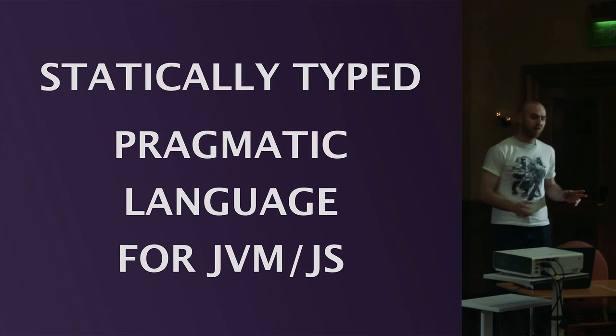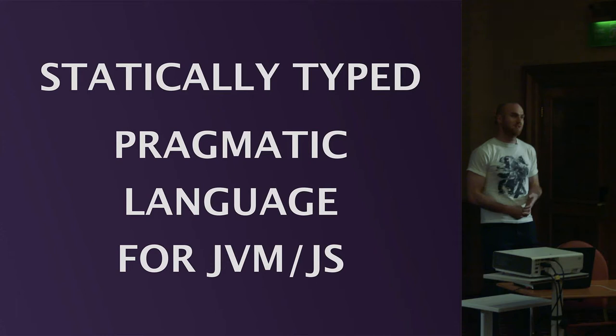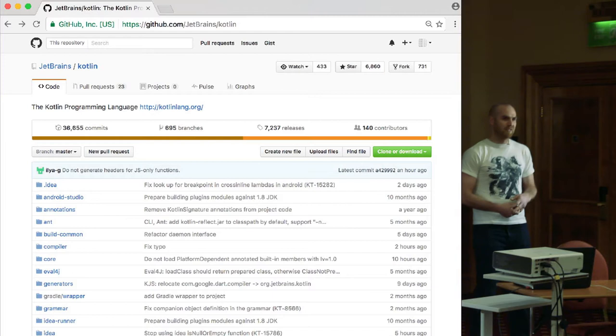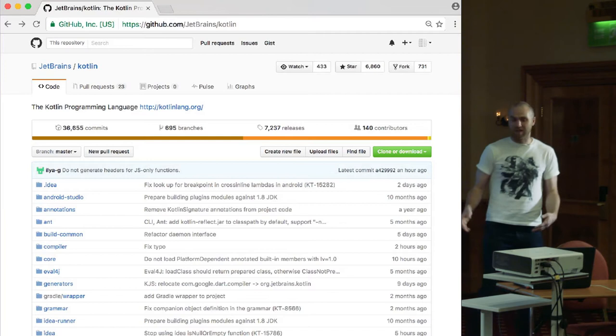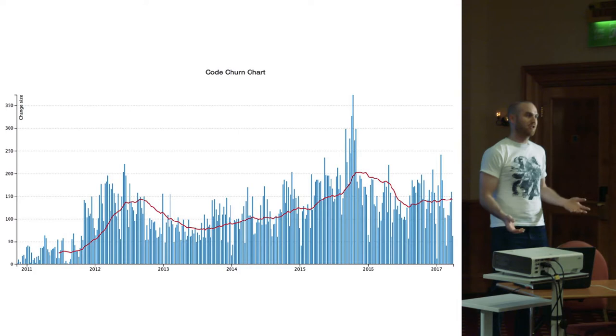In reality, Kotlin is a language for the JVM — it's statically typed, what they call a pragmatic language for JVM and JavaScript. Pragmatic means it's not experimental; it was created to be used on real projects and not introduce completely crazy features. It officially targets the Java Virtual Machine and JavaScript. It's open source, developed by JetBrains, on GitHub with an Apache 2 license. There aren't many contributors from outside JetBrains, so it's basically de facto owned by JetBrains.